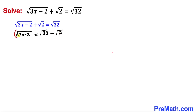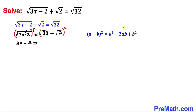Now let's take a square on both sides to undo the square root on the left hand side. The square and square root undo each other, so we are left with 3x minus 2 on the left hand side. Now let's recall the famous identity: (a minus b) whole square equals a squared minus 2ab plus b squared.